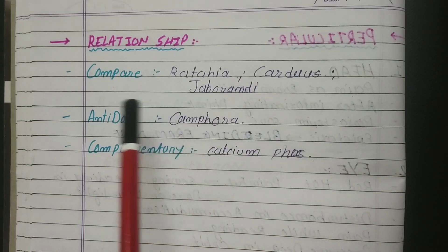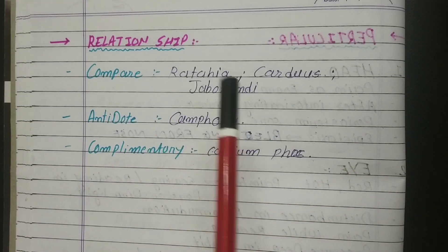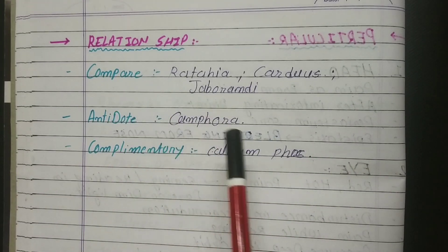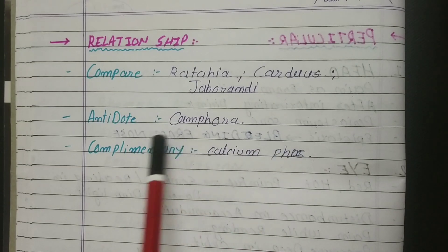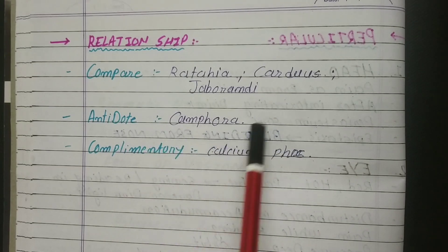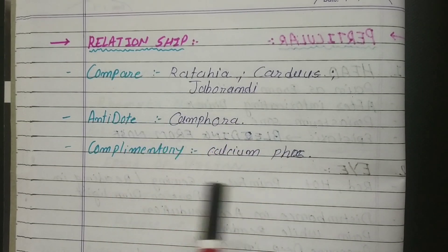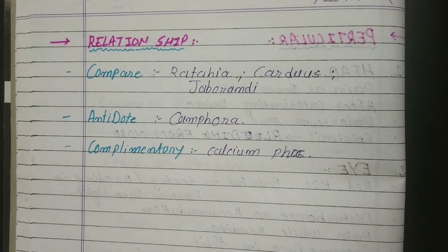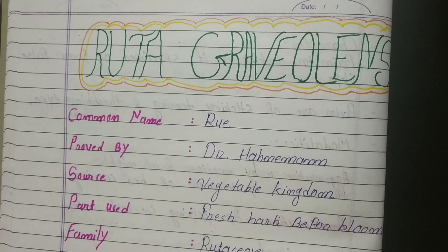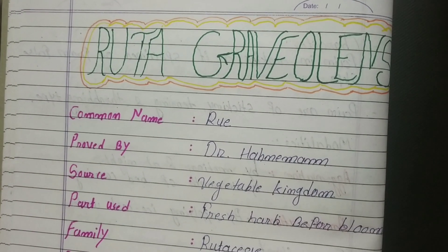The first point in the relationship with other medicines covers comparison, antidotes, and complementary remedies. You can tell me more in the comments section.